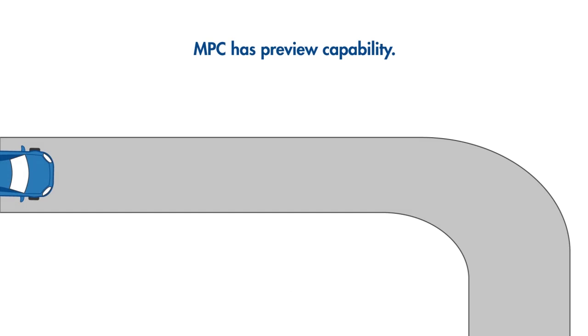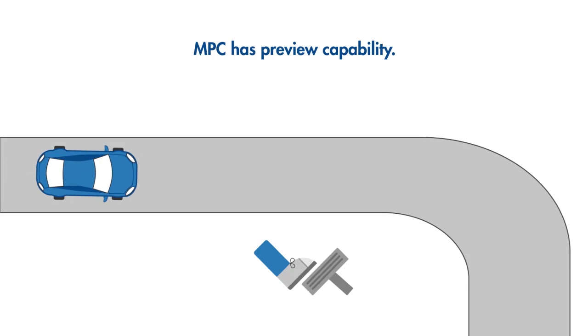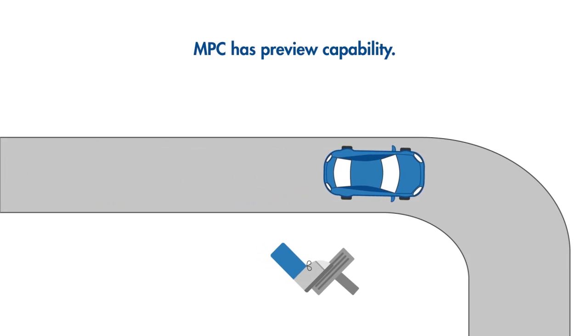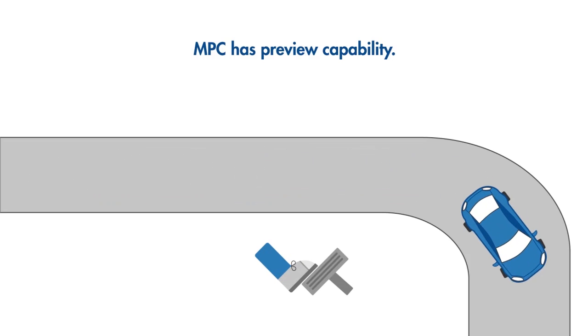However, if the car has a camera in the front, which provides information about the future trajectory, the controller will know in advance about the upcoming corner, so it can brake sooner to safely stay in the lane. MPC can easily incorporate future reference information into the control problem to improve controller performance.